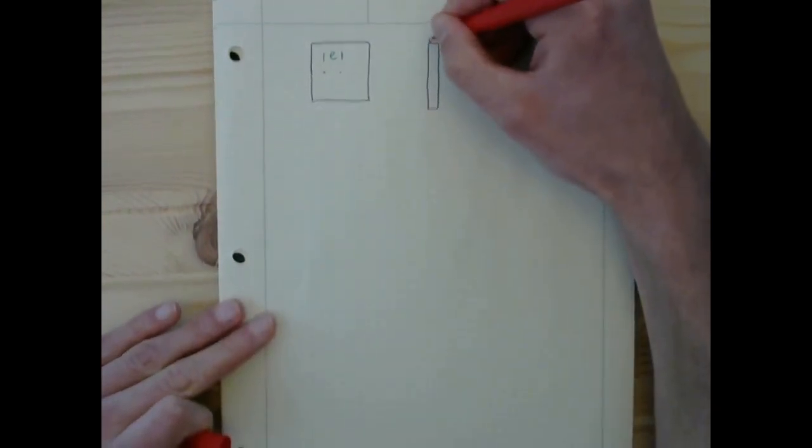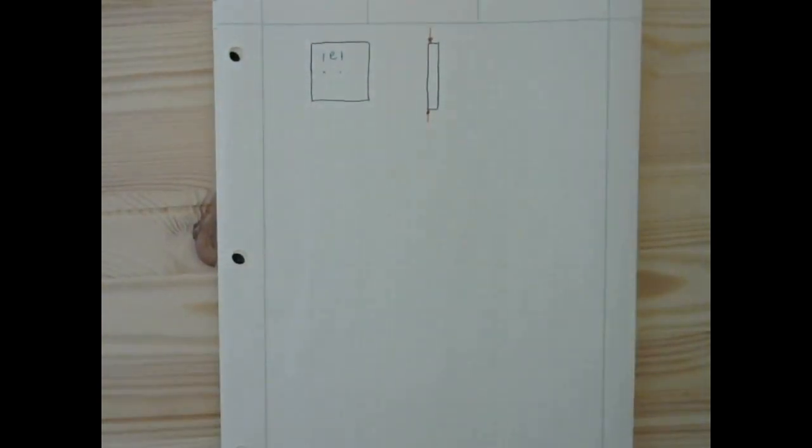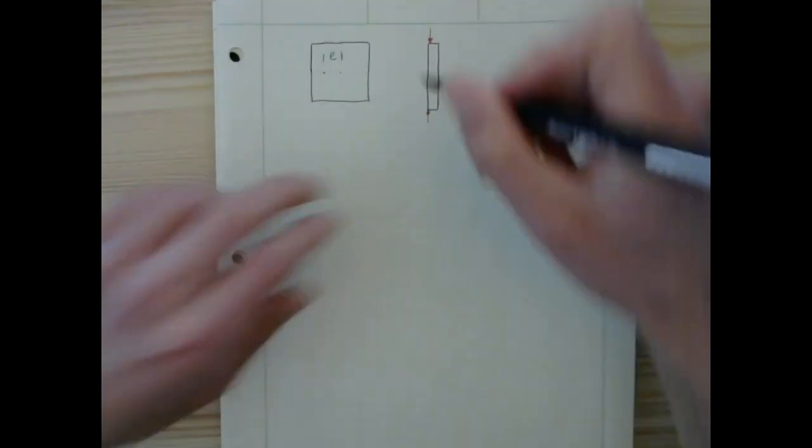So if we have some eccentricity, so maybe we apply our load P off of the centroid of this, we're going to have not just an axial load, but a moment as well.